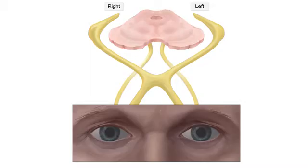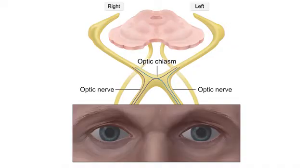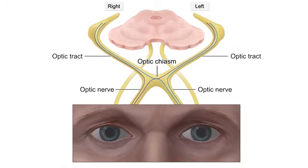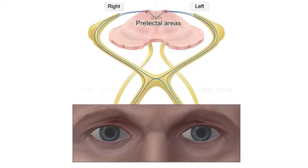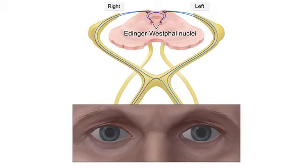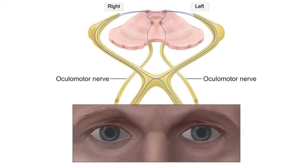Afferent fibers from the retina travel along each optic nerve to the optic chiasm, where they split and follow both optic tracts to reach the pretectal areas in the midbrain. Nuclei within the pretectal areas activate both of the Edinger-Westphal nuclei, each of which sends parasympathetic fibers down the ipsilateral oculomotor nerve to the ipsilateral pupillary constrictor muscle.